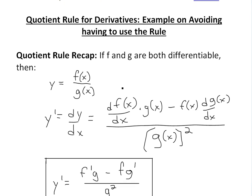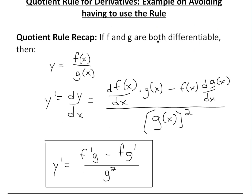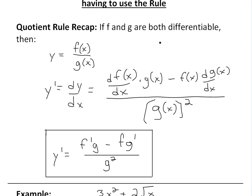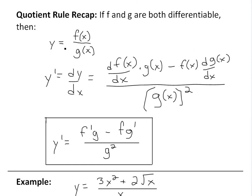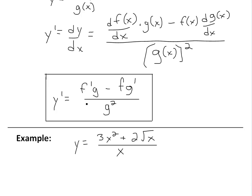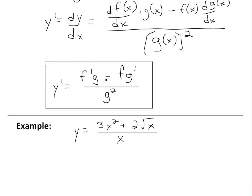Before I get to that, I just want to quickly recap on the quotient rule. If f and g are both differentiable — meaning the derivative exists at any specific interval you're looking at — and you have y equals f(x) divided by g(x), then the derivative is f prime times g(x) minus f(x) times g prime, all divided by g(x) squared. Or written as: y prime equals f prime times g minus f times g prime, all divided by g squared.